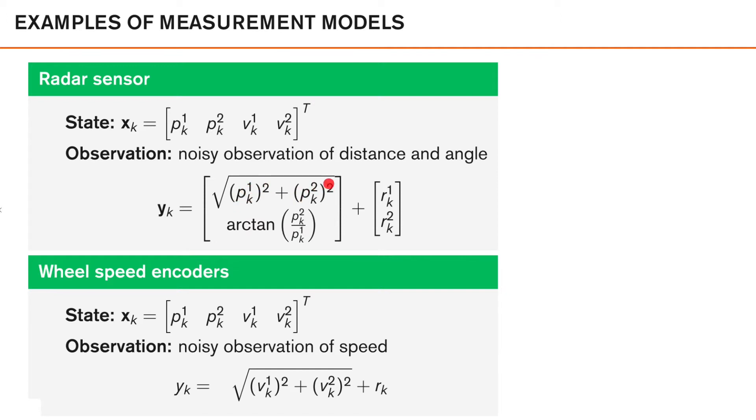In that case, the distance and angle to the object can be expressed quite easily. So the distance is just the square root of p1 squared plus p2 squared. And the angle can be expressed as arcus tangens of p2 divided by p1. And then we have some measurement noise. Now note that this is a nonlinear function of our state. So this is not a linear measurement model.